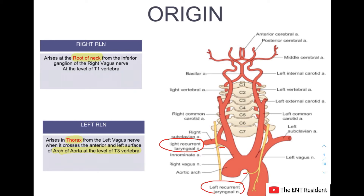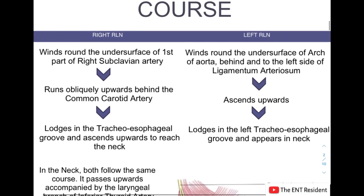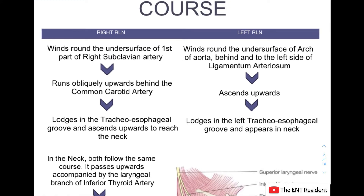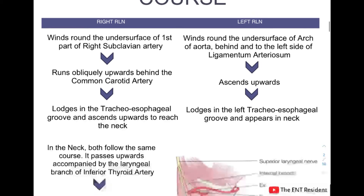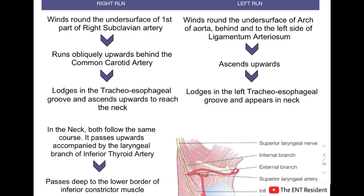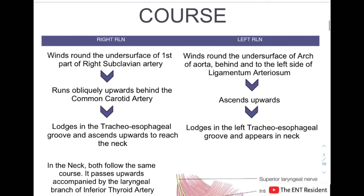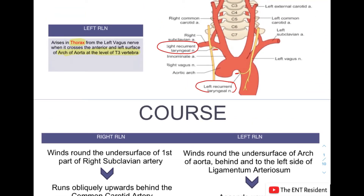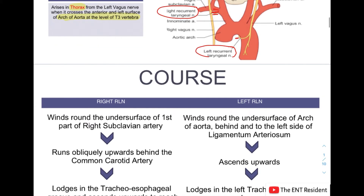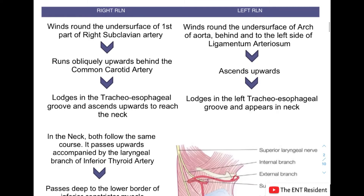So the right and left sides have very different origins — from the neck and from the thorax respectively. On the right side, the nerve winds around the undersurface of the first part of the right subclavian artery, then runs obliquely upwards behind the common carotid artery, after which it lodges in the tracheoesophageal groove and ascends upwards to reach the neck.